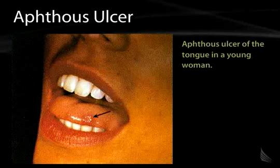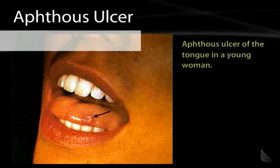The picture in this slide simply shows what we deem an aphthous ulcer, pointed out by the arrow on the tongue of this individual.